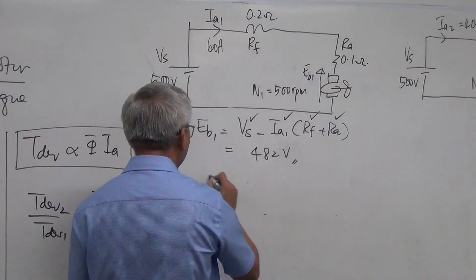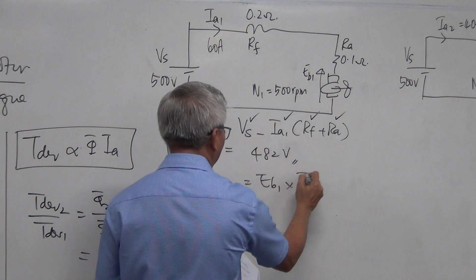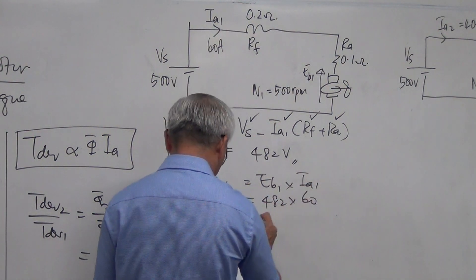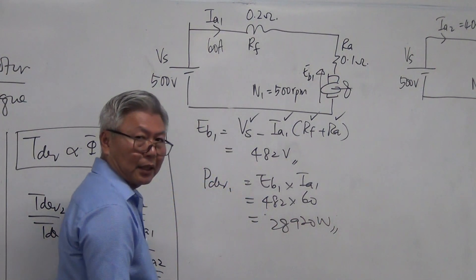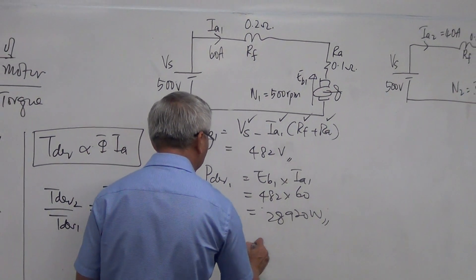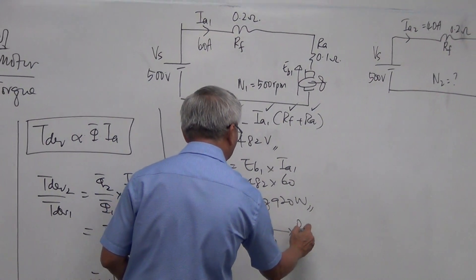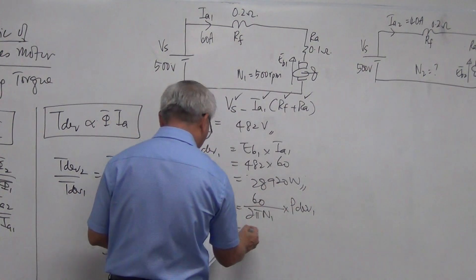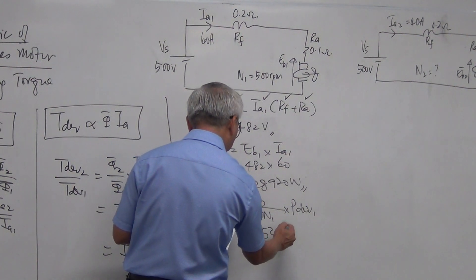And the power developed is equal to EB1 times IA1. I substitute 482 multiply 60, and I get 28920 watts. And with that, I calculate the torque developed. Torque developed 1 is equal to 60 over 2 pi N1 multiply power developed 1. So substitute the power developed, substitute the speed, and I get the answer of 552.33 Nm.